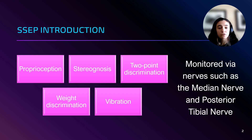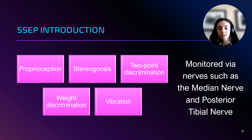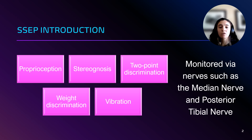SSEPs are electrical responses recorded from the nervous system after a sensory stimulus is applied. These signals help us evaluate the functional integrity of neural pathways, particularly during surgeries involving the spinal cord, brainstem, and peripheral nerves.